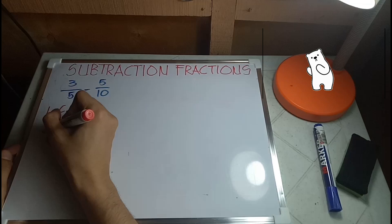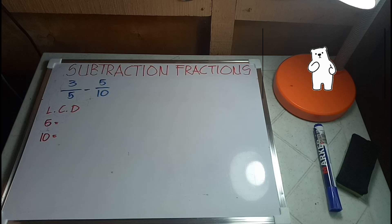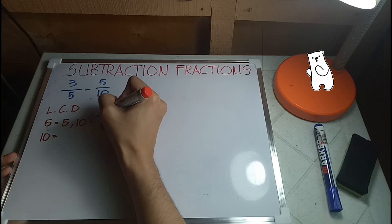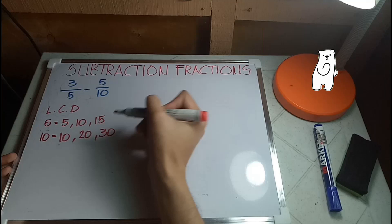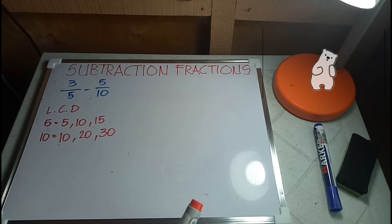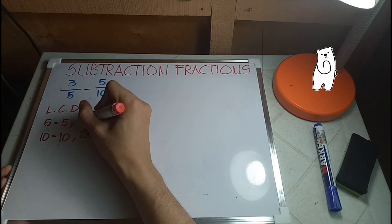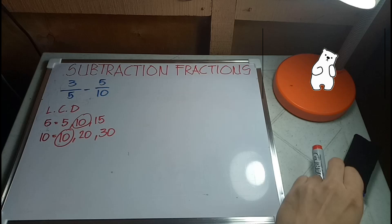Copy paste the denominators and we'll do arithmetic progression. So 5, 5 plus 5 is 10, 10 plus 5 is 15. We have 10, 10 plus 10 is 20, 20 plus 10 is 30. As you can see, the least common denominator or the smallest one they have in common is 10, so we'll use 10 as their new denominator.